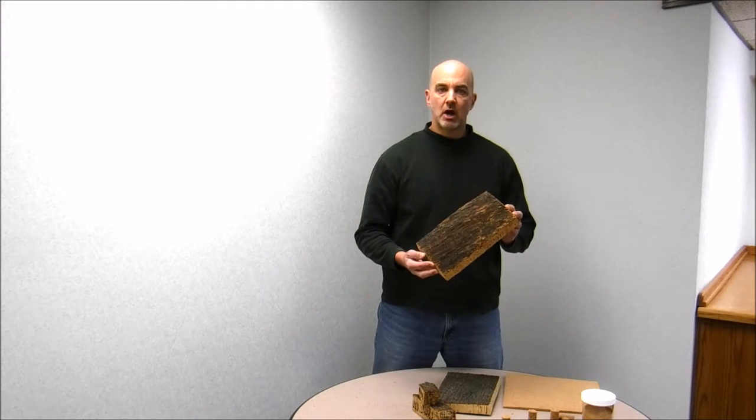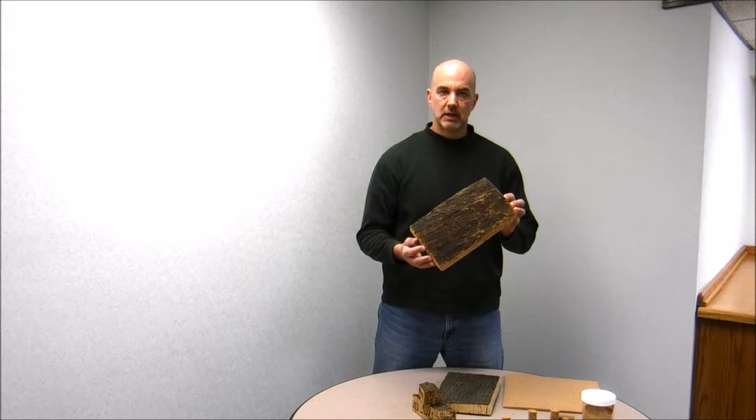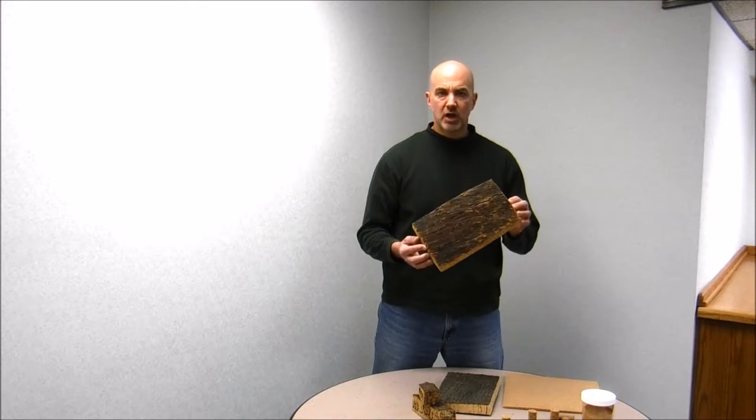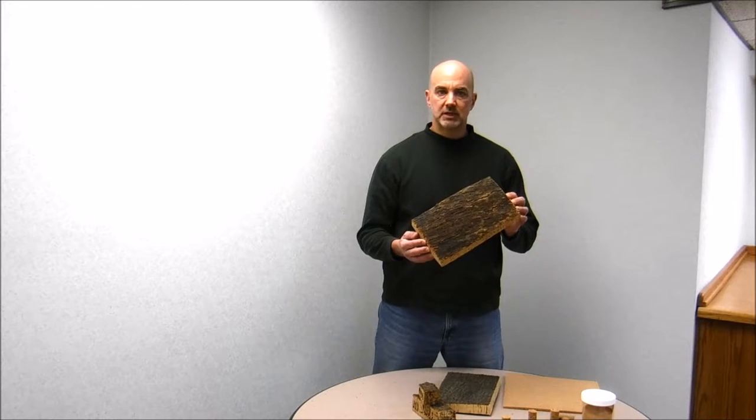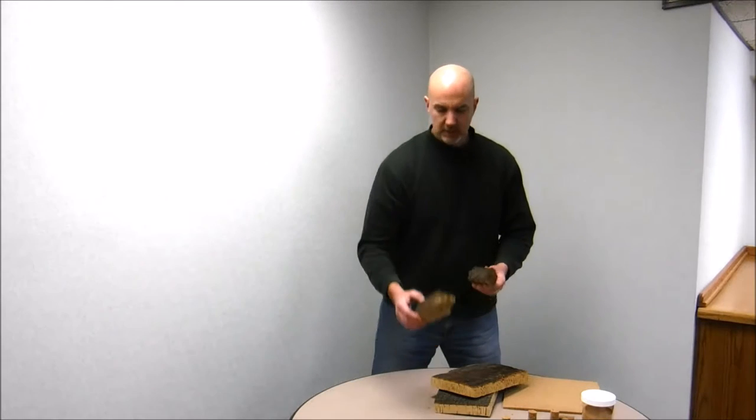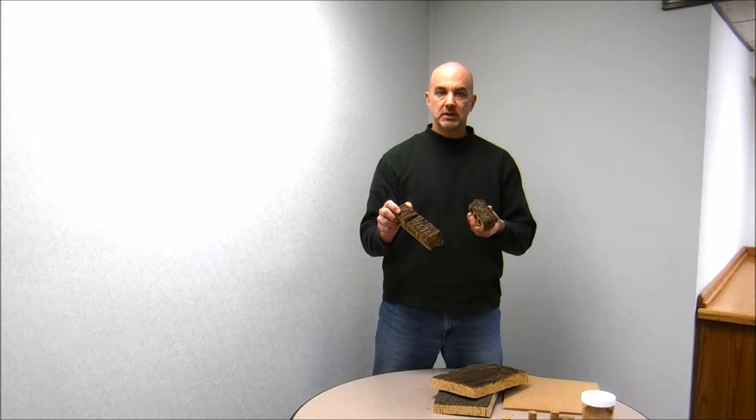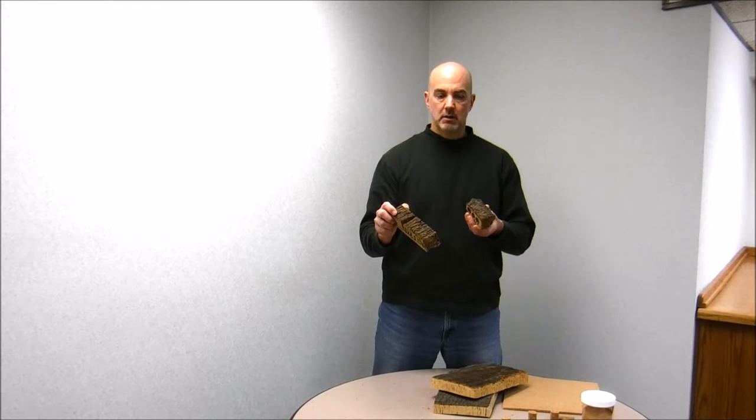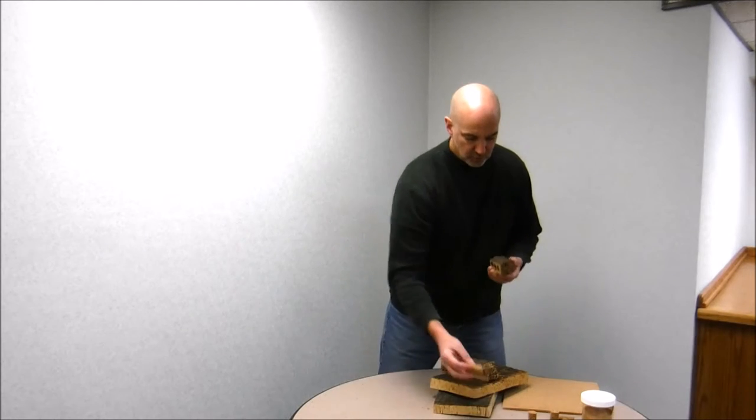After the bark is harvested, it's going to look like this. It comes out in sheets, larger than this obviously, but this gives you a good understanding. Then we cut those sheets into strips approximately 2 to 3 inches wide. Once those strips have been removed, we core out wine stoppers.